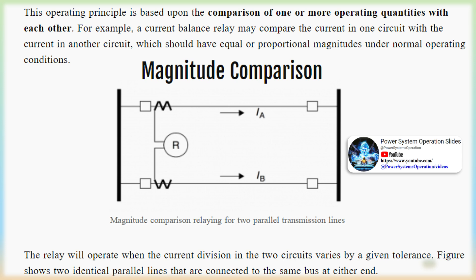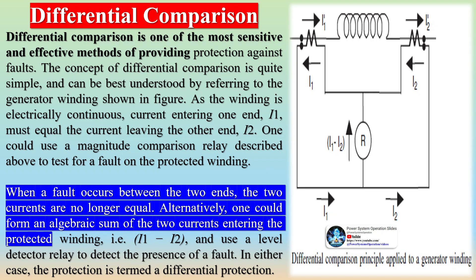The ideal level detector relay would have a characteristic as shown by the solid line in figure. In practice, the relay characteristic has a less abrupt transition, as shown by the dotted line.